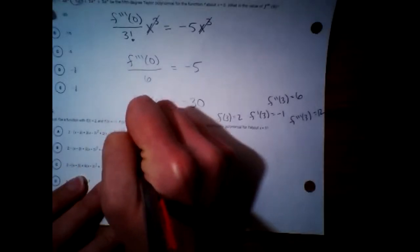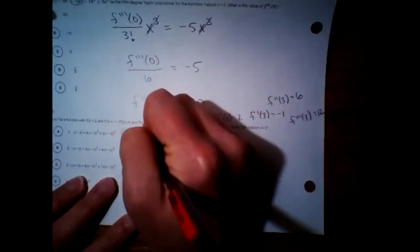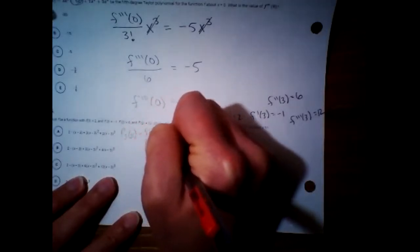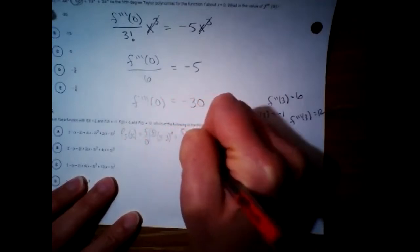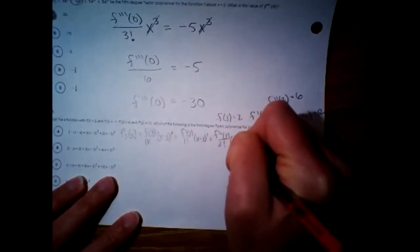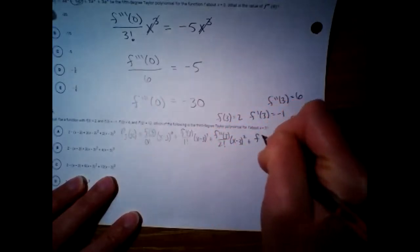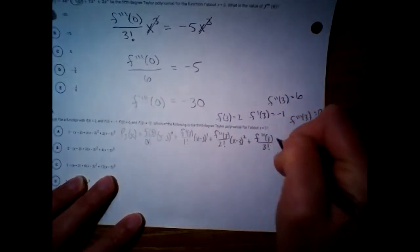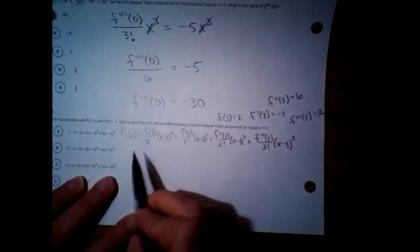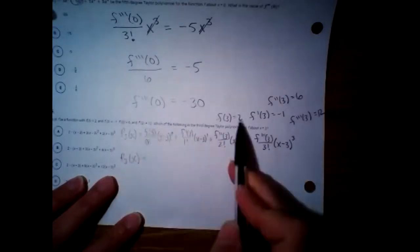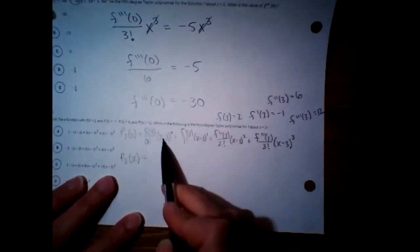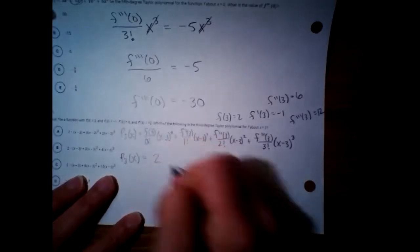I'm going to write out the whole general form again — centered around 3. Using all the values they gave us: f(3) = 2, 0 factorial is 1, anything to the zero power is 1 — so the entire first term is 2.